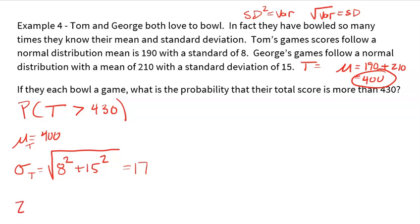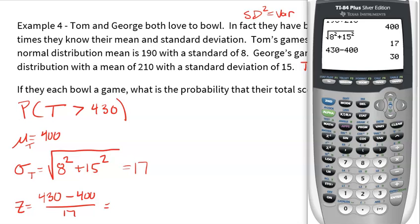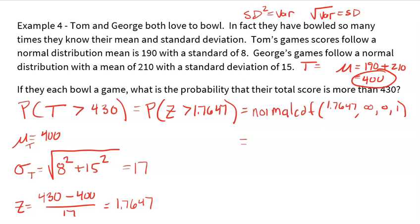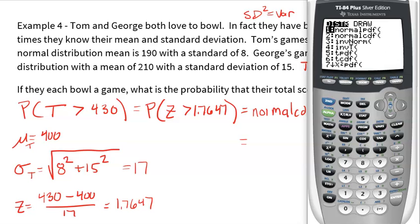All right, so now I'm ready to answer the question. All I need is my Z score. How likely or how far from the mean is 430? So I'm going to take 430, the number I was asked about, and subtract the mean, divide by the standard deviation. So 430 minus 400, and then divide by 17 is 1.7647. So the question asked me to find the probability that their total is greater than 430, which is equivalent to find the probability that a Z score is greater than 1.7647. And the answer to that is going to be found by using normal CDF on my calculator.